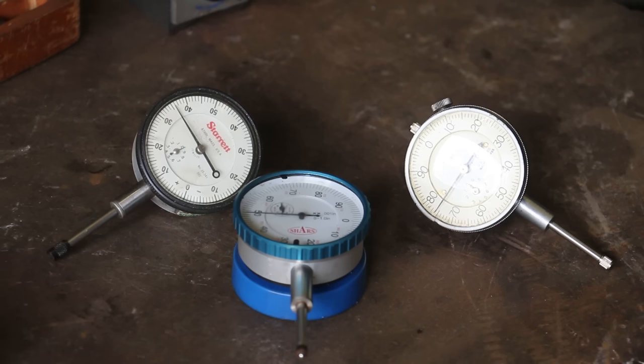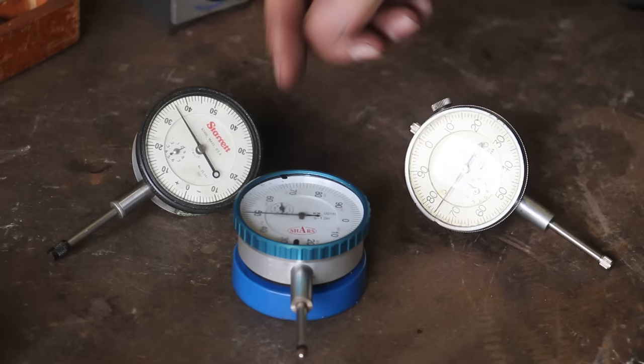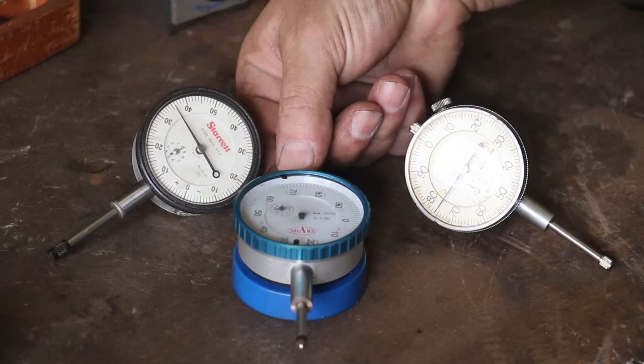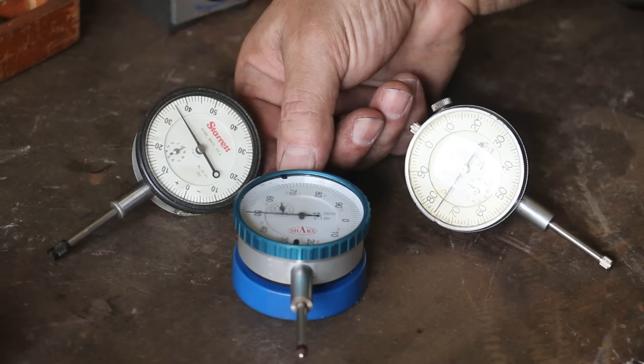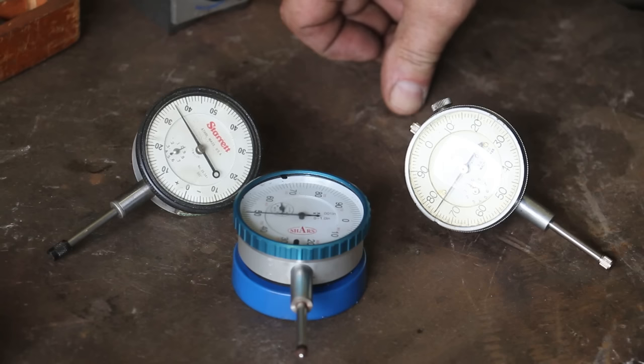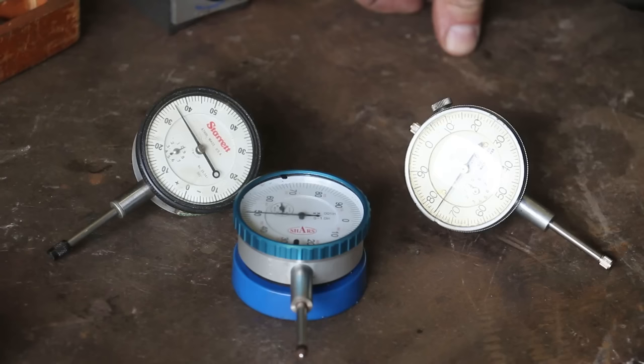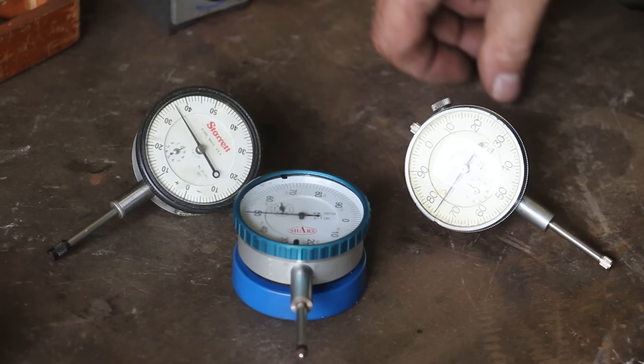I will tell you that I have been more than happy with this Shars indicator. This one here has a magnet on the back. I use it a lot on the lathe and it holds up well. When you're looking at $20 versus $150, you can buy a lot of $20 indicators. This one here, it's going to wear out, it's going to break a lot quicker than this Starrett under normal wear and tear conditions. But indicators can sometimes get a good bit of abuse. They get knocked over, they get banged up.